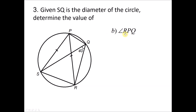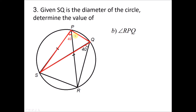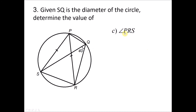Question 3B: We are looking for angle RPQ. This angle lies within the red triangle, and angle SPQ is subtended by the diameter SQ. Since the angle subtended by the diameter is 90°, and from 3A we know the adjacent angle is 40°, angle RPQ equals 90° minus 40°, giving RPQ equals 50 degrees.